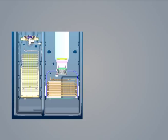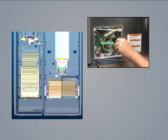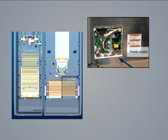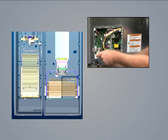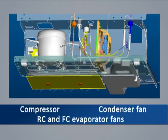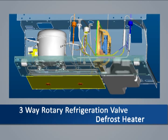Theory of operation: the main control board software is designed to control the cooling system. Thermistors located in the RC and FC compartments provide temperature information to the board. All cooling and defrost decisions are made by the board based on those inputs and customer usage. Outputs from the board control the compressor, condenser fan, RC and FC evaporator fans, three-way rotary refrigerant valve, and the defrost heater.